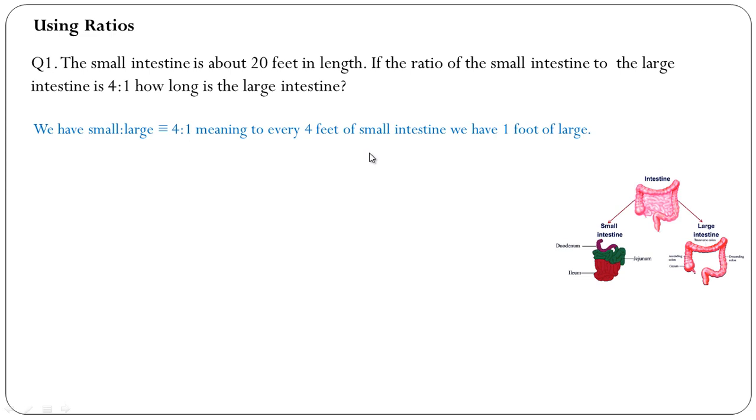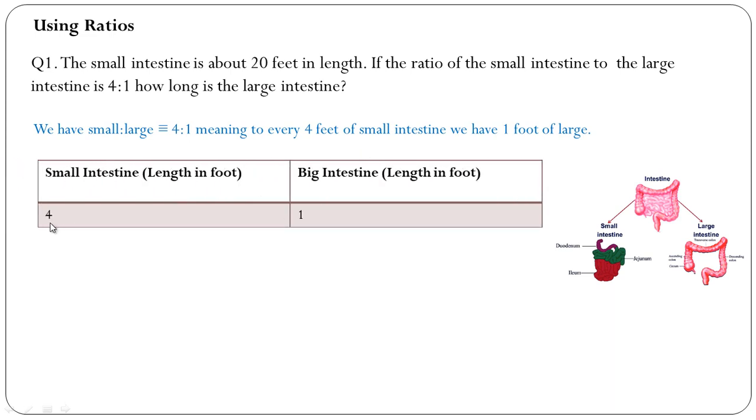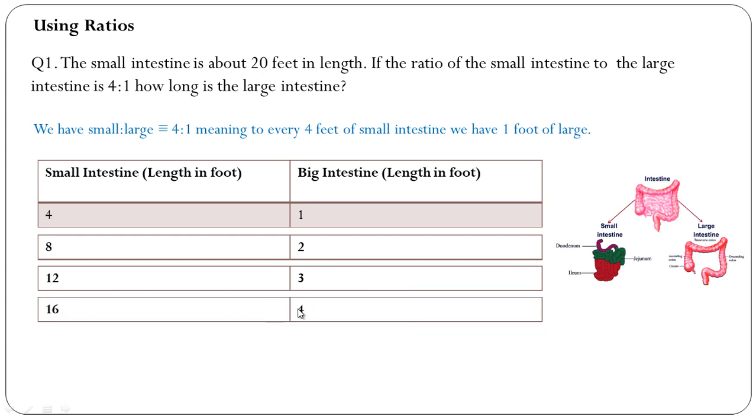So for 4 feet of small intestine we have 1 foot of large intestine. For 8 feet we will have 2 feet, for 12 we will have 3 feet, for 16 we have 4 feet, and for 20 we have 5 feet of large intestine.